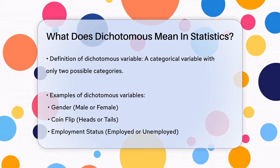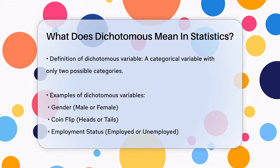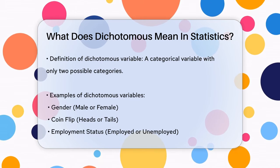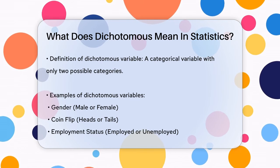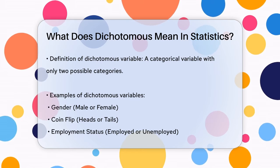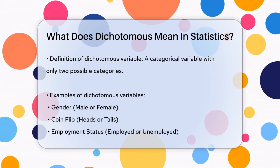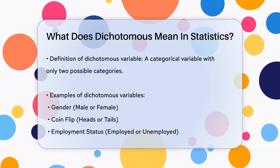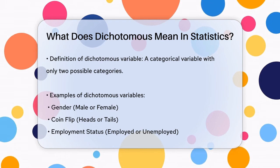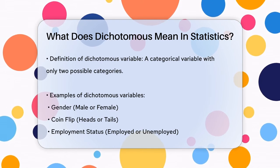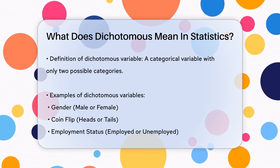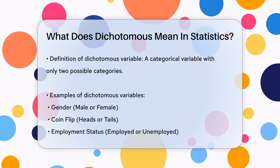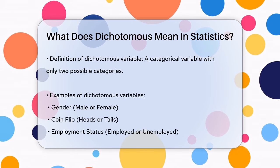Here are some examples to make it clearer: gender — male or female; coin flip — heads or tails; employed or unemployed; pass or fail on an exam; alive or dead. These variables are called dichotomous because they only have two distinct options.